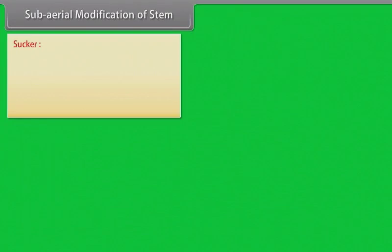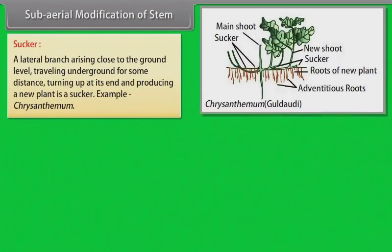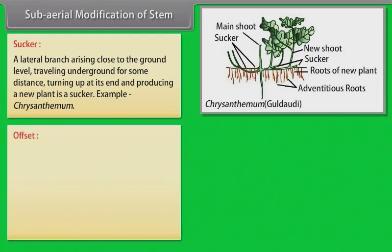A sucker is a lateral branch arising close to the ground level, traveling underground for some distance, turning up at its end and producing a new plant. Example: Chrysanthemum.